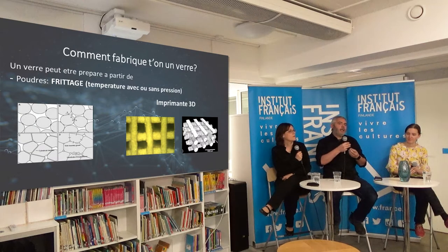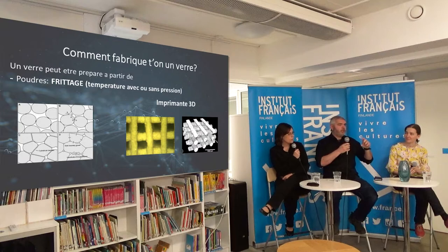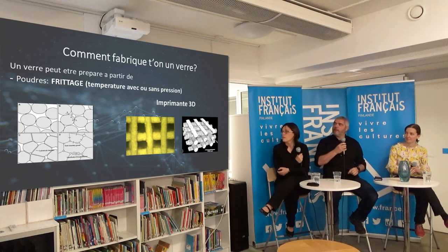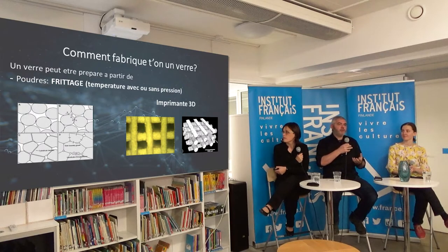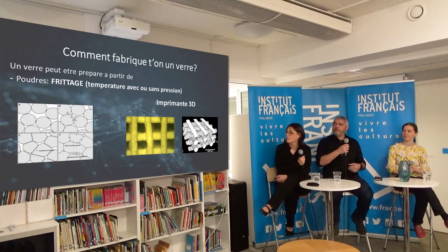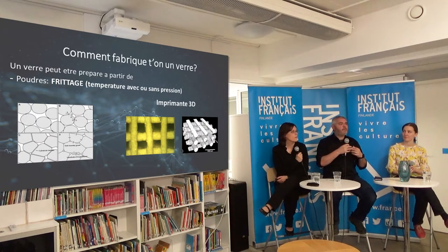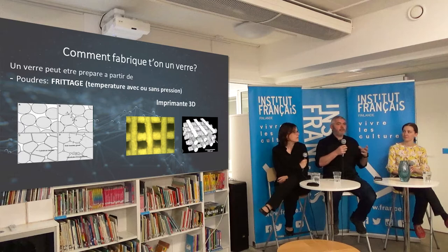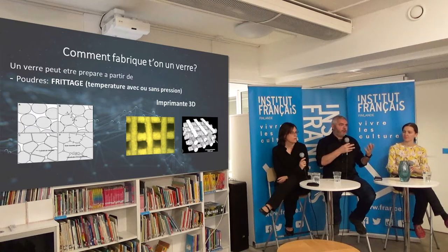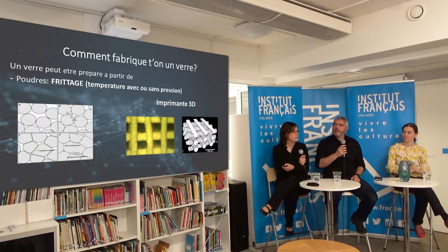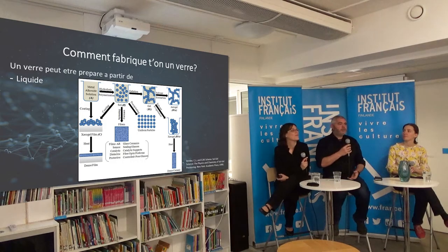In 3D printing, we mix glass particles into a gel — like pluronic, which looks like honey — introduce it into a syringe, and print the desired shape. In this case it's a 3D scaffold, a porous material used for bone implants, where we can tailor the size and dimensions precisely. We then do sintering: the gel burns off, the glass particles soften, stick together, and form the final material shape.